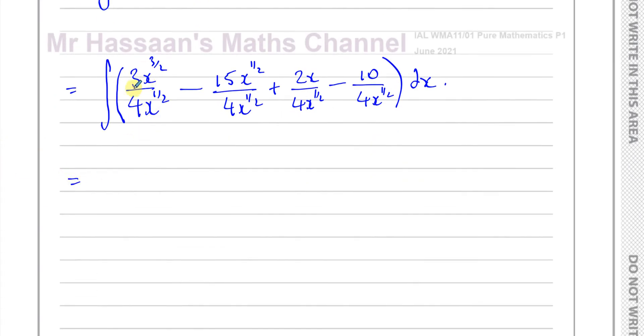Now I can simplify this. Still haven't integrated, still getting it ready. So that's 3 quarters x to the power of—now you have 3 over 2 minus a half, which is going to be... it's like 3 over 2 minus 1 over 2, which is... sorry, which is 1. This is 2 over 2. That's like 1 and a half minus a half, which is 1.